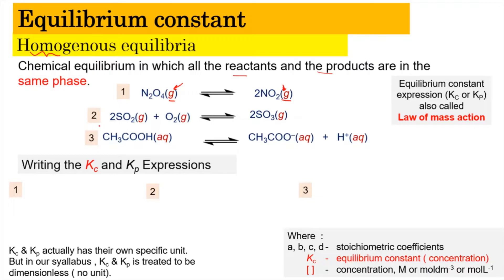For the second equation, similarly, we have SO2 reacting with oxygen to produce SO3, and they also involve the same state of matter, which is gaseous. For the third example, we have ethanoic acid, CH3COOH aqueous, which dissociates into the ethanoate ion as well as the H⁺ ion. All the species here involve the aqueous state, which is homogeneous.